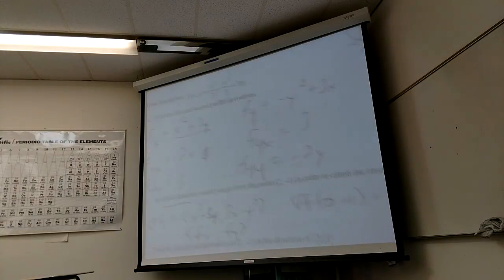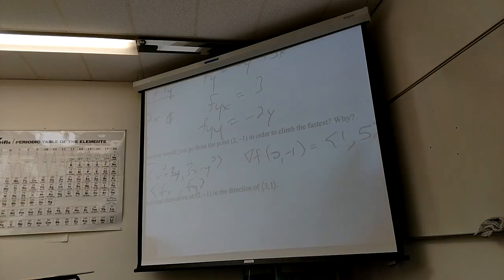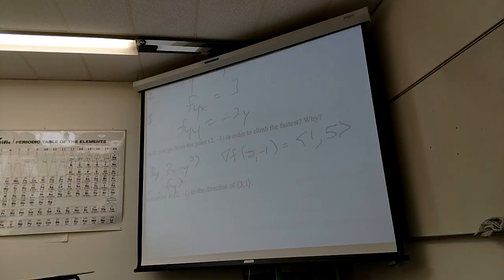This is fx comma fy. That's what the gradient is right? I like it. You got your fx and you got your fy. So what is the gradient at 2, negative 1? It will be 4 minus 3, 1. And this will be 6 minus 1, 5. So what direction, what direction I go in in order to climb the fastest in the direction of that vector?